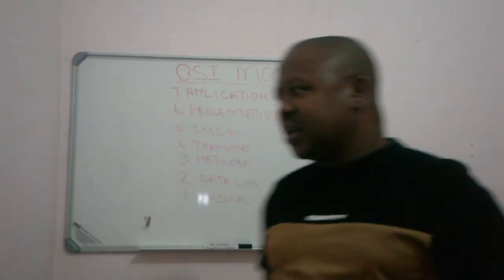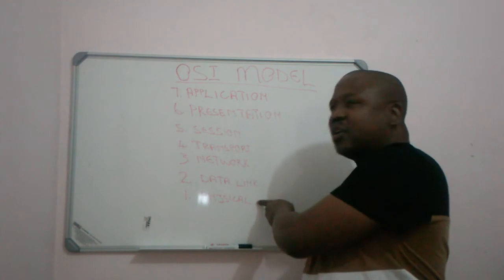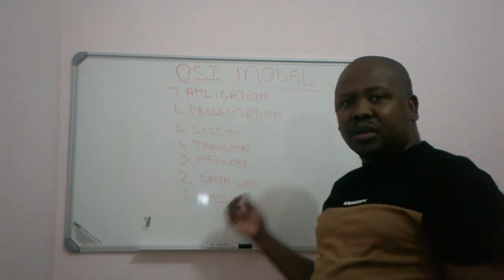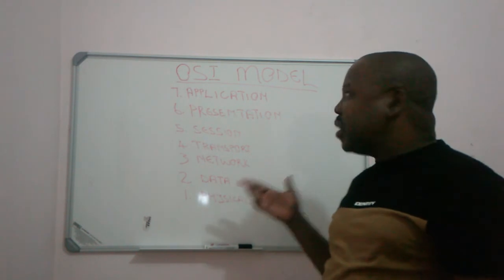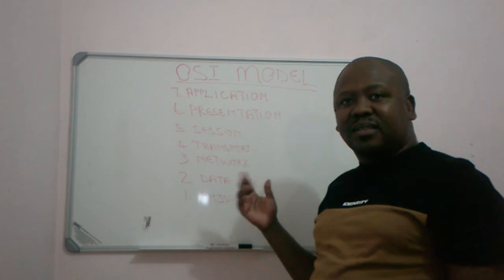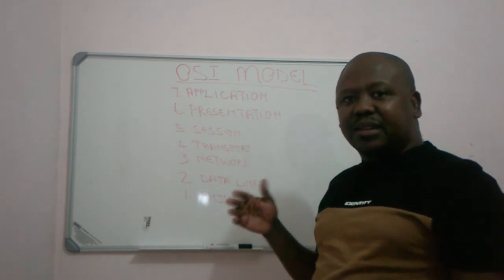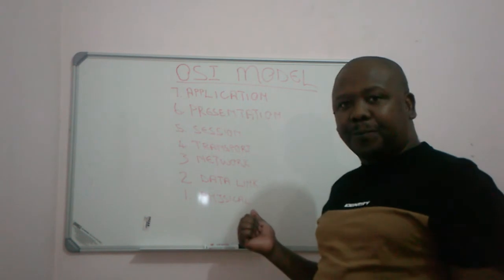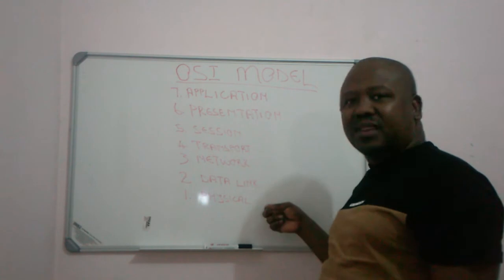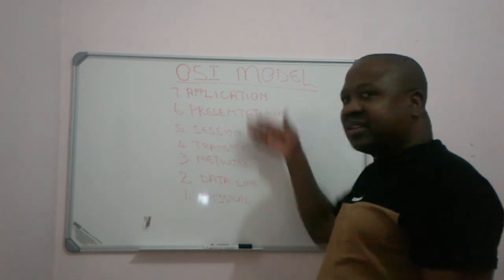An Ethernet cable belongs on Layer 1 of the OSI model. If you do not know what is an OSI model, just take a moment and check the videos that I did before this video, and then come to this video so that you can understand what is the physical layer when we talk about a physical layer, and also understand all the layers.